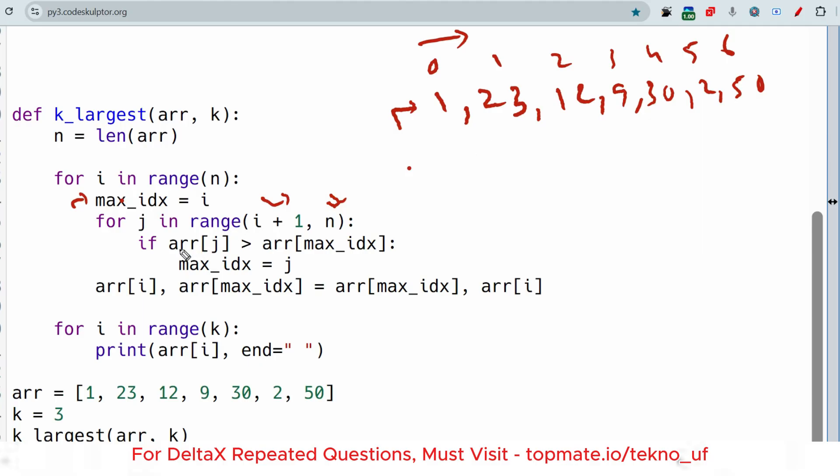In the nested for loop, we are going from the next element. This was the i-th value, so this is the i+1 value. We are going from i+1 to n to compare the values. At first we are checking if array[j] is greater than array[max_idx]. We assumed the first element is the max element. If array[j] is greater, then reassign the max_idx value as j.